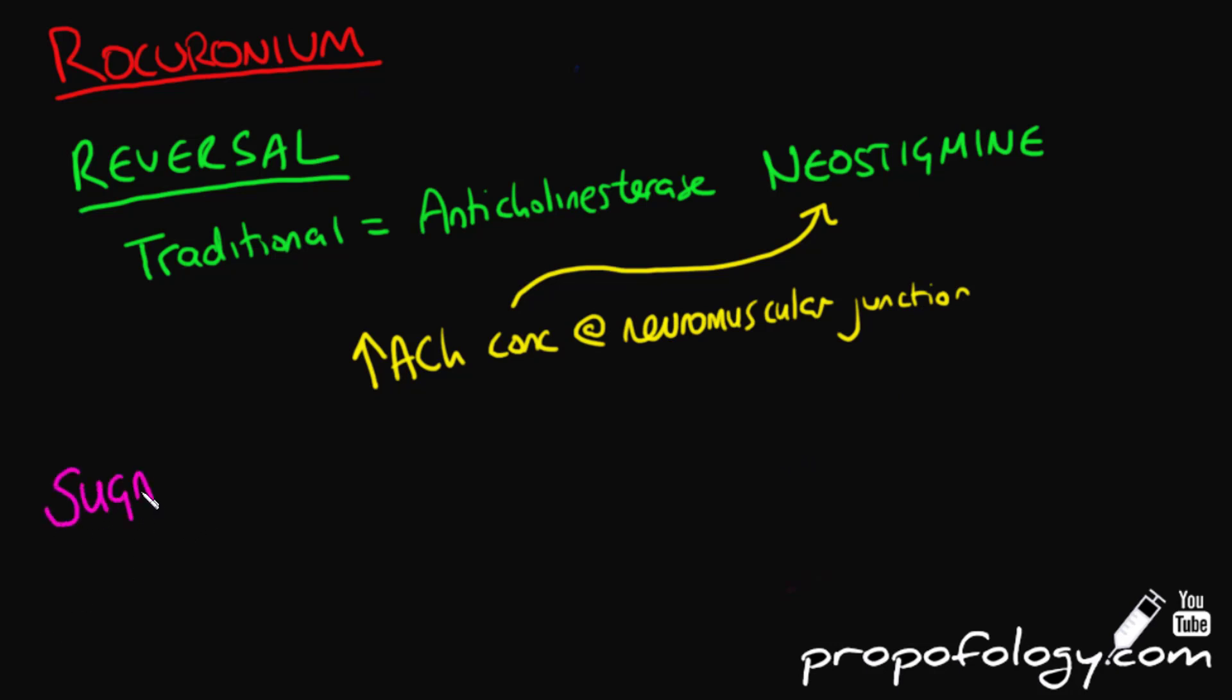We now have Sugammadex. Sugammadex is a modified gamma cyclodextrin. It's actually of the same sort of family as Febreze, which claims to have odor-eating technology inside it. Nevertheless, Sugammadex engulfs rocuronium or vecuronium, rendering it unable to work at the neuromuscular junction.